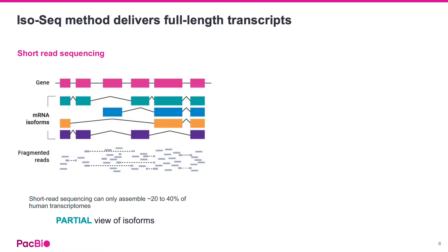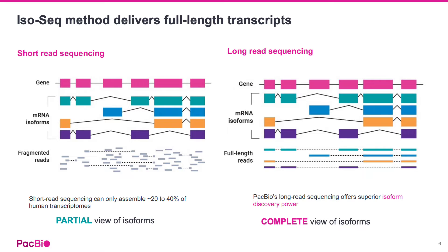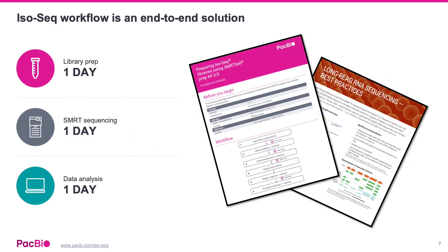This transcript assembly method is unable to unambiguously identify full-length transcripts. In contrast, the PacBio ISO-SEQ method sequences full-length cDNA — no assembly is required. The ISO-SEQ method is an end-to-end solution requiring one day each for sample prep, sequencing, and analysis.